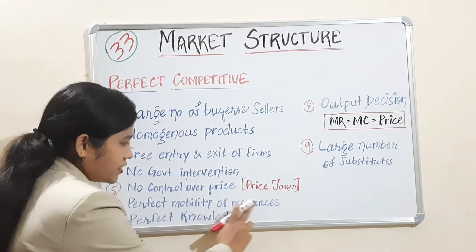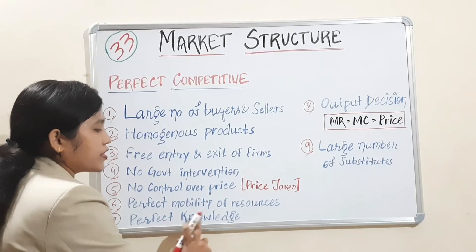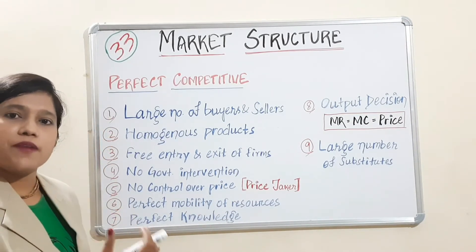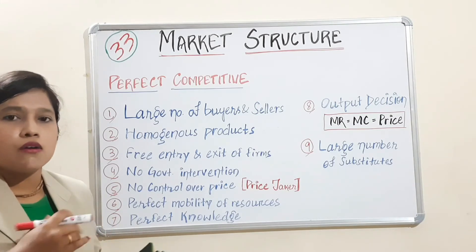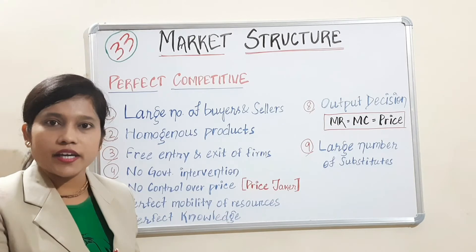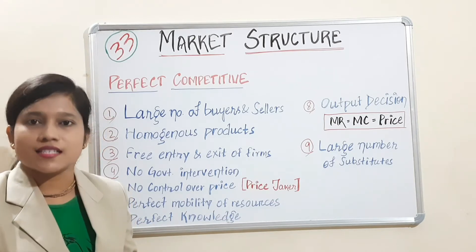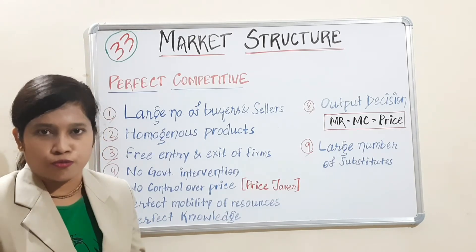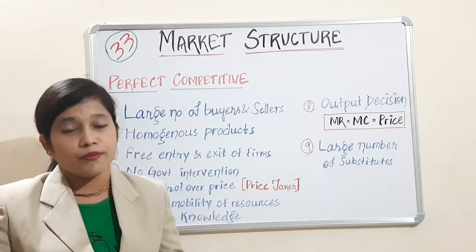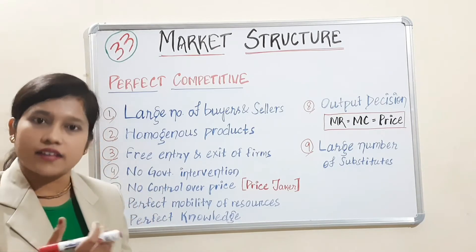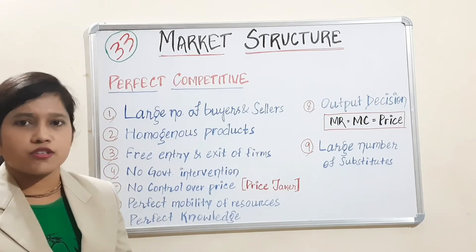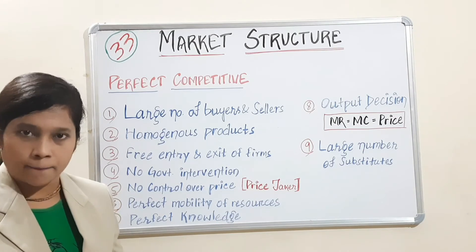Next is perfect mobility of resources and perfect knowledge. Whatever resources there are, they can be perfectly mobile from one place to another — from production place to marketplace, or from surplus place to scarcity place. Perfect knowledge means farmers and other agents should have perfect knowledge regarding arrival, price, and the overall market scenario.